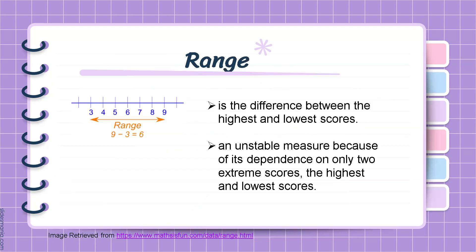The range is the difference between the highest and the lowest scores. It is an unstable measure because of its dependence on only two extreme scores — the highest and the lowest scores. Any change in these scores changes the range.